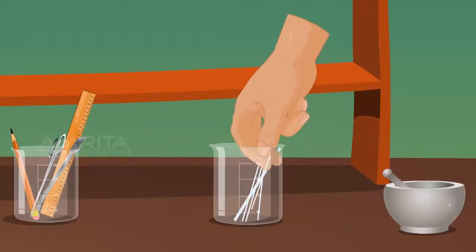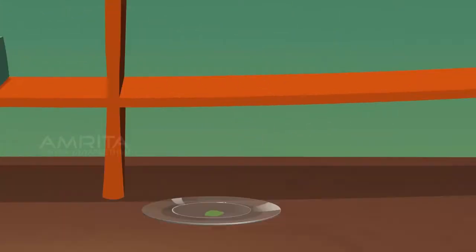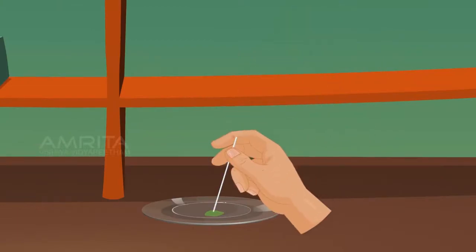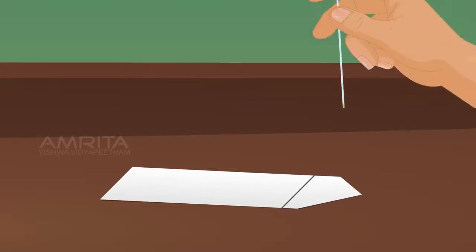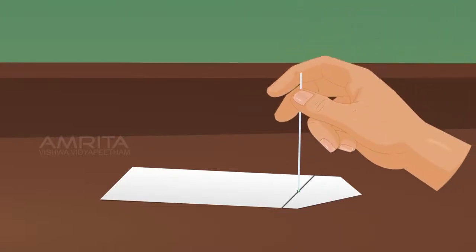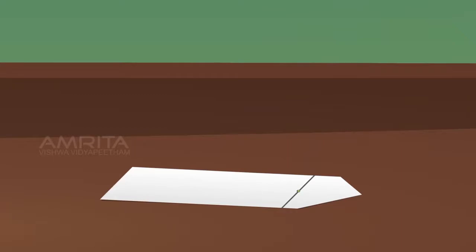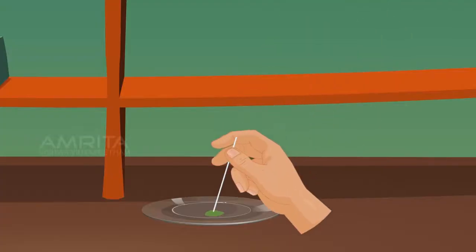Using a capillary tube, take some extract and put a drop of the pigment extract in the middle of the line. Allow the drop to dry and repeat this process until 4 or 5 drops are placed on the paper.